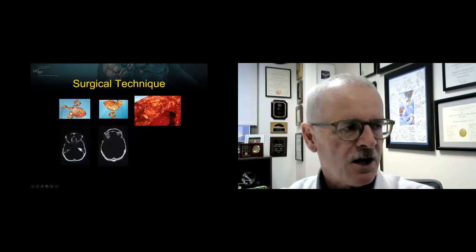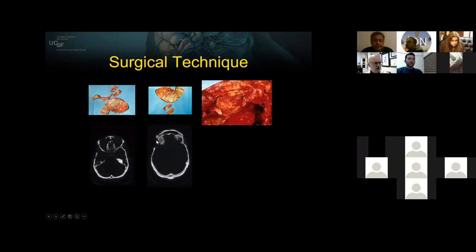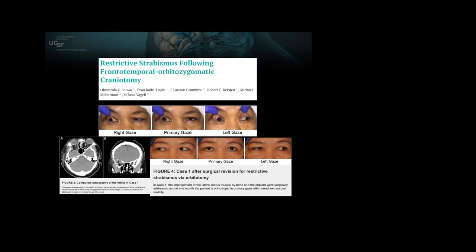Here's an example where we actually harvested the inner table of the frontal bone to reconstruct the orbit — this is what the reconstruction looks like for the lateral wall and the roof. One problem we've learned: we had two cases of restricted strabismus because the posterior aspect of the Medpor implant was tethering the lateral rectus muscle. We published this as a case report on restrictive strabismus following this approach.